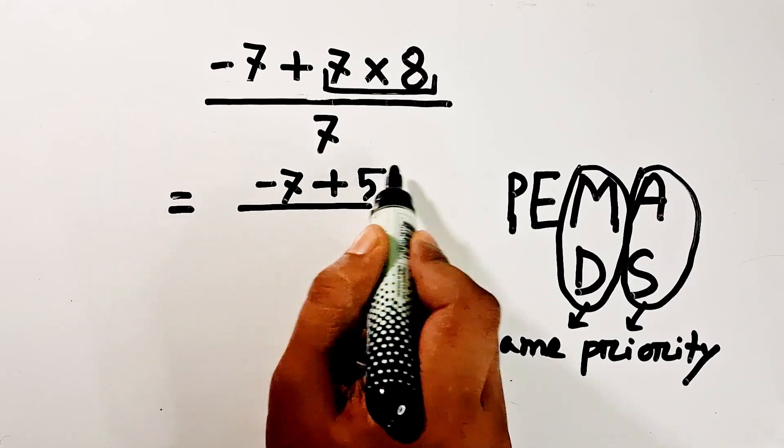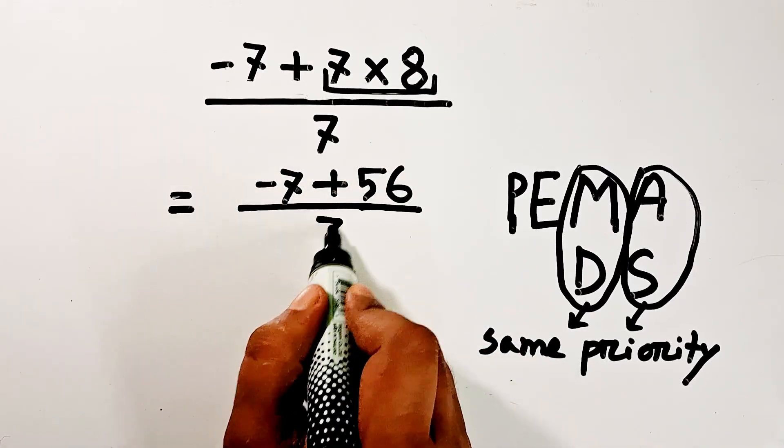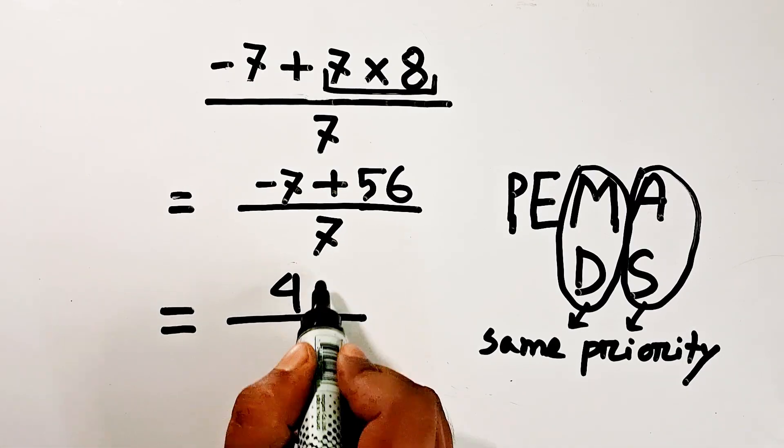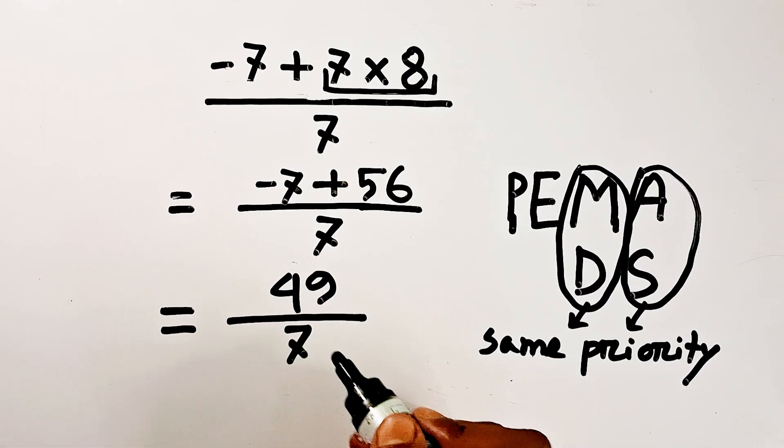This minus seven plus seven into eight equals 56, divided by seven. So 56 minus seven equals 49, divided by seven. 49 divided by seven equals seven.